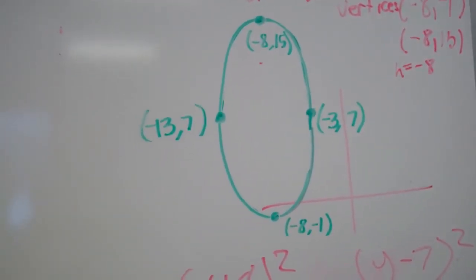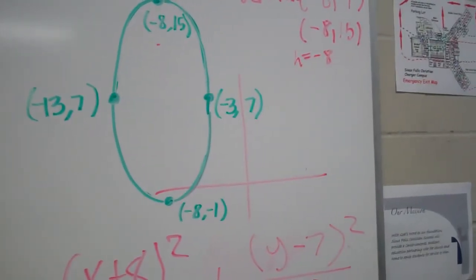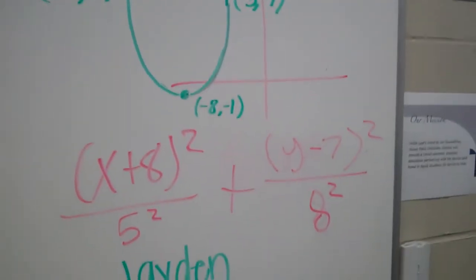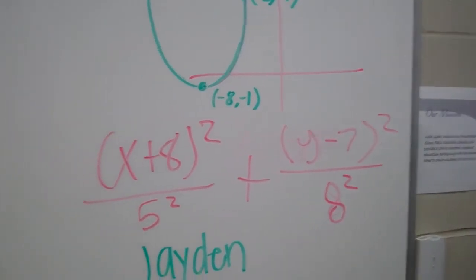And then they'd be halfway between negative 13 and 3, which is negative 8. So these two points is enough to know where the center is? Yeah. All right. And then from the vertices, we could figure out what H was, which is negative 8, and then we just plugged it in down here. Oh, nice. All right. Good work, Jayden. Nice job. Good thinking behind that.